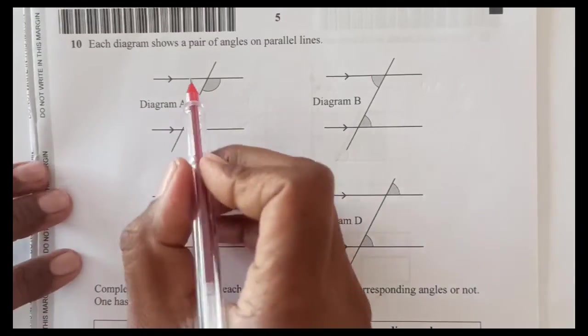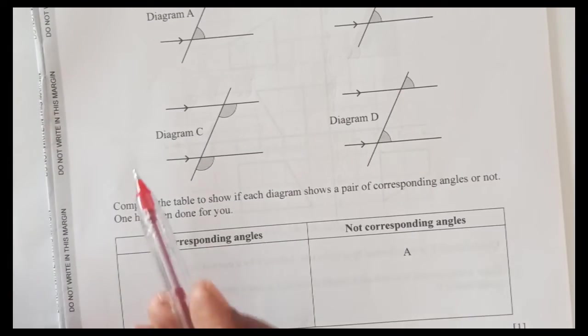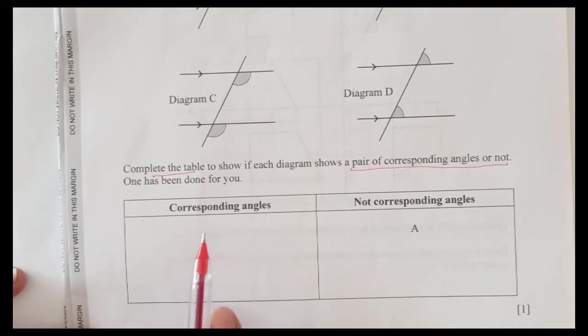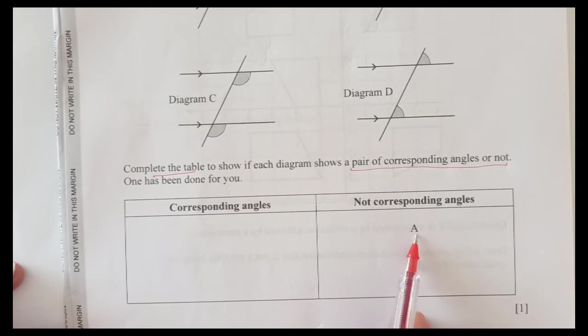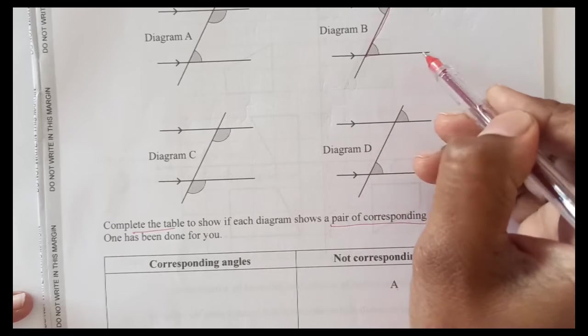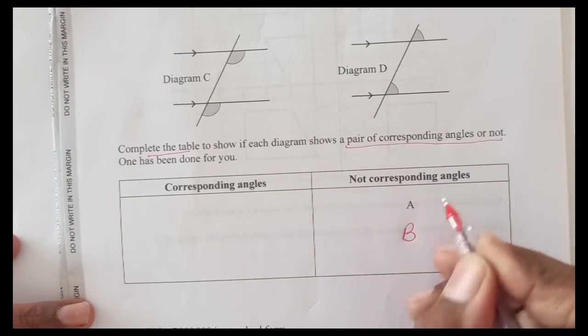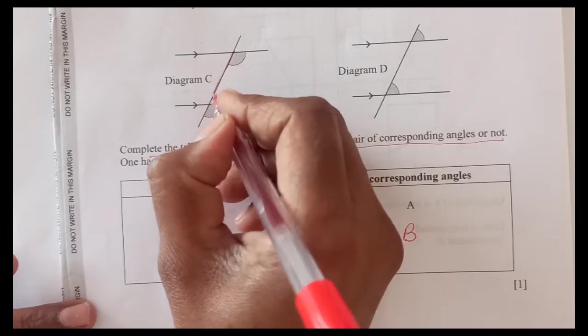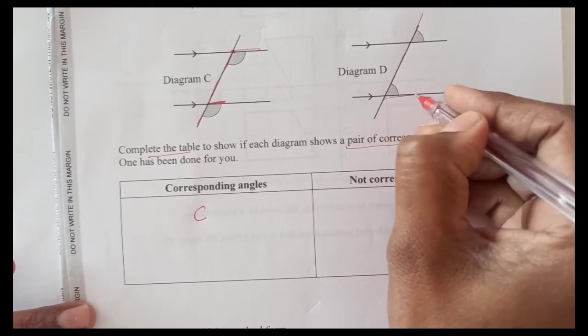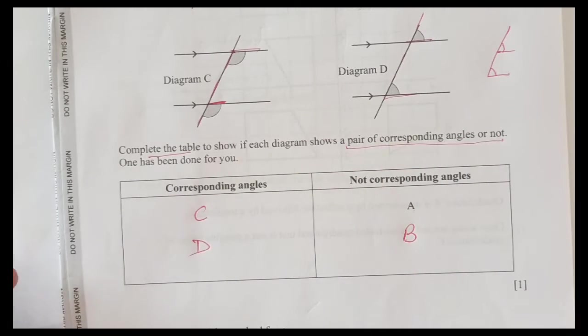Question number 10: each diagram shows a pair of angles on parallel lines. We have diagram A, B, C and D. Complete the table to show if each diagram shows a pair of corresponding angles or not. One has been done for you, A is not a corresponding angle. B, see this is Z shape here, when you see Z shape like this these angles are called alternate angles not corresponding. So B will also come here not corresponding angles. If you see F shape, that is the corresponding angle. C will come here, even here we have this F shape and both angles are above the line. So C and D will come over here.